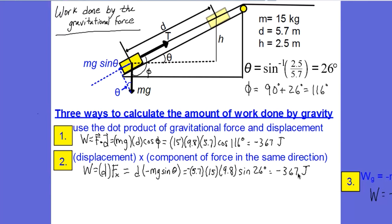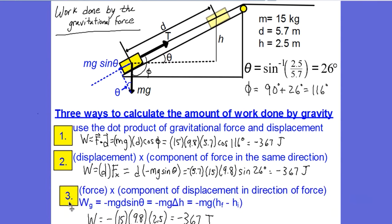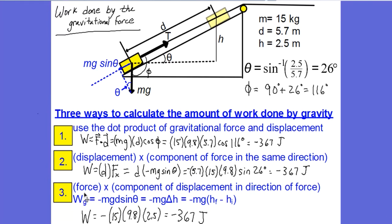And the third way of looking at it is to think of it as the force times the component of the displacement that was in the direction of the force. Up here, we say the displacement times the component of force in the direction of the displacement. But when you look at this equation, you can see that you could associate the sine theta with the d instead of with the mg. And when you do that, if you look at this triangle, d sine theta is this vertical displacement right here, h. So we can say that then the work done by gravity is the force times the vertical displacement. So negative mg d sine theta minus 367 joules.